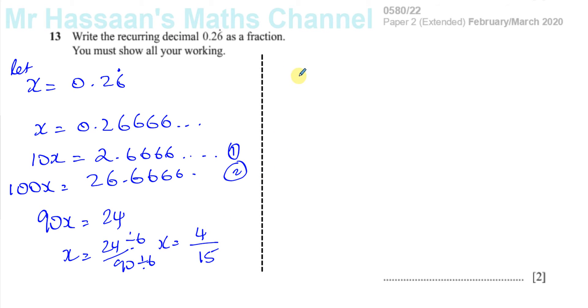Another way, which is very similar, is to say, again, let x equals 0.26 recurring, and then multiply by 10, you have 10x equals 2.6 recurring.